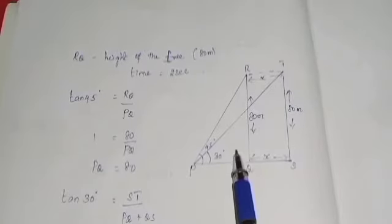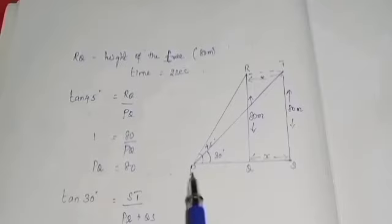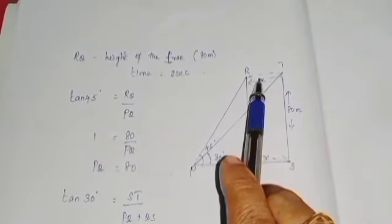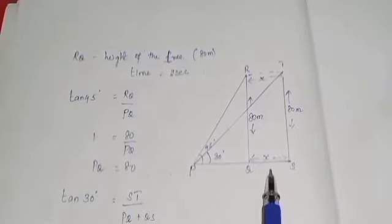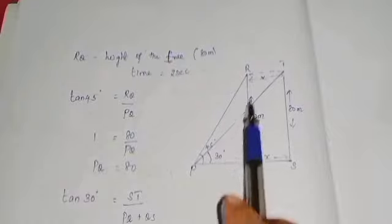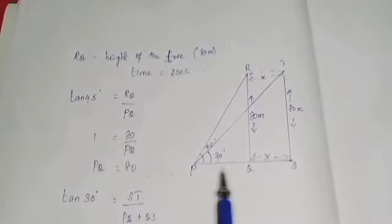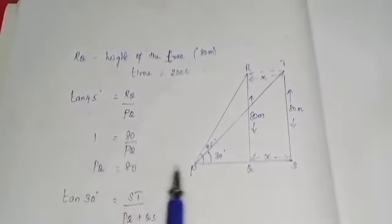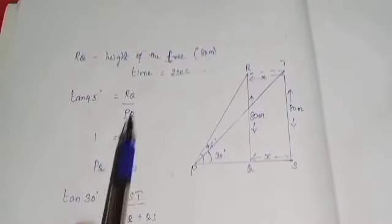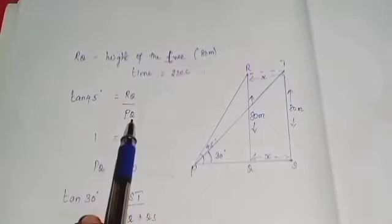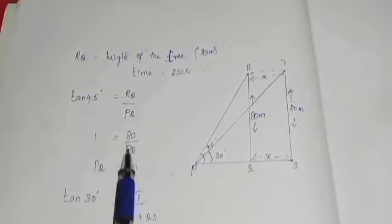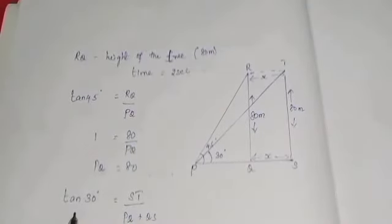For the first triangle PQR, we use tan 45 degrees. Tan equals opposite side by adjacent side. Tan 45 equals RQ by PQ. Since tan 45 is 1, and RQ is 80 meters (the height of the tree), we substitute: 1 equals 80 by PQ. Cross multiplying, PQ equals 80 meters.